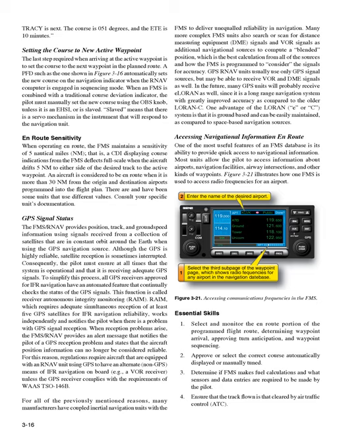On-route sensitivity. When operating on-route, the FMS maintains a sensitivity of 5 nautical miles — that is, a CDI displaying course indications from the FMS deflects full-scale when the aircraft drifts 5 nautical miles to either side of the desired track to the active waypoint. An aircraft is considered to be on-route when it is more than 30 nautical miles from the origin and destination airports programmed into the flight plan. There are and have been some units that use different values; consult your specific unit's documentation.